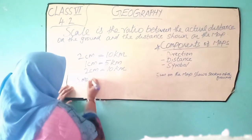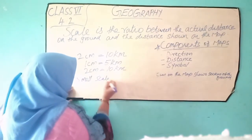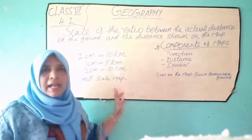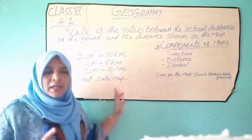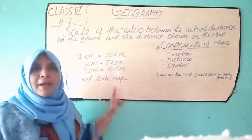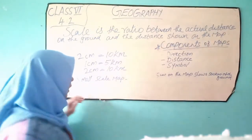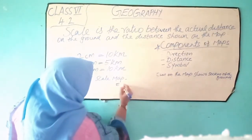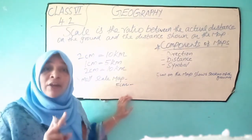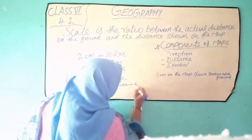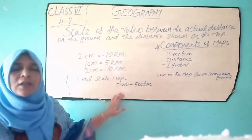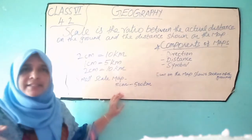Small scale map. When large areas like continents and countries are to be shown on paper, we use a small scale map. For example, 5 cm on the map shows 500 km of the ground. This is called a small scale map.